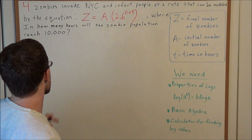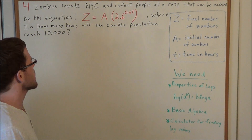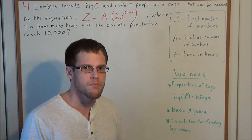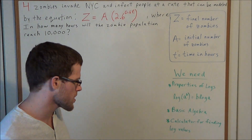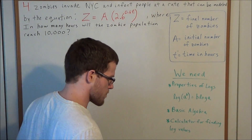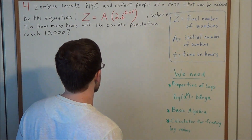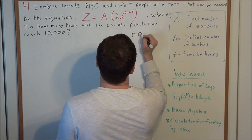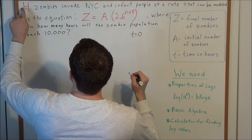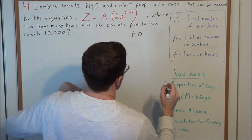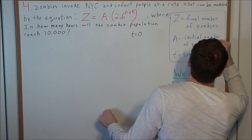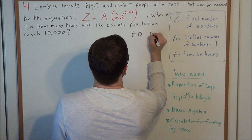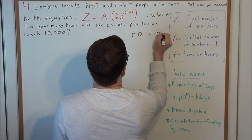We're trying to find in how many hours the zombie population will reach 10,000. But before we tackle that, let's get a feel for what's going on. At time equals 0, the initial conditions are that there are four zombies — so the initial number of zombies is four.